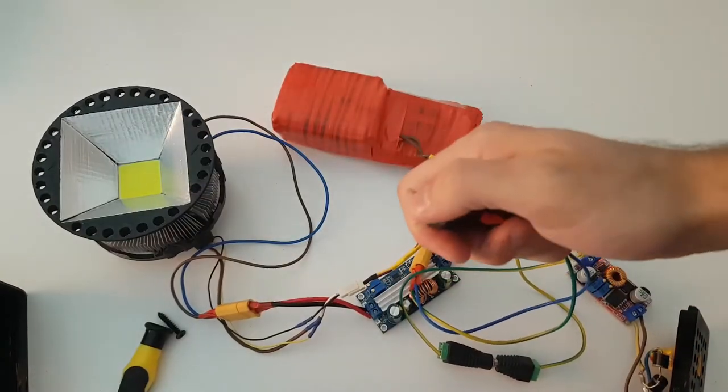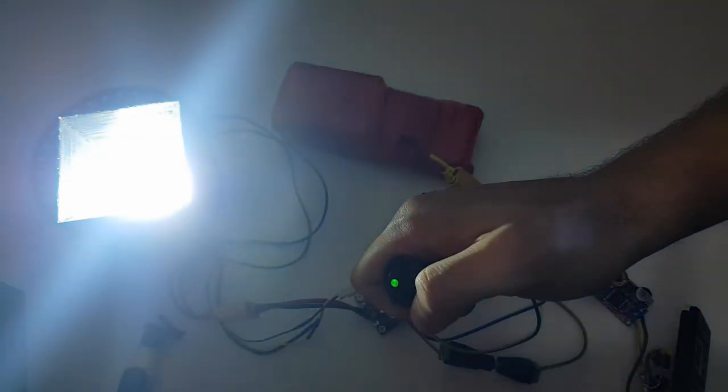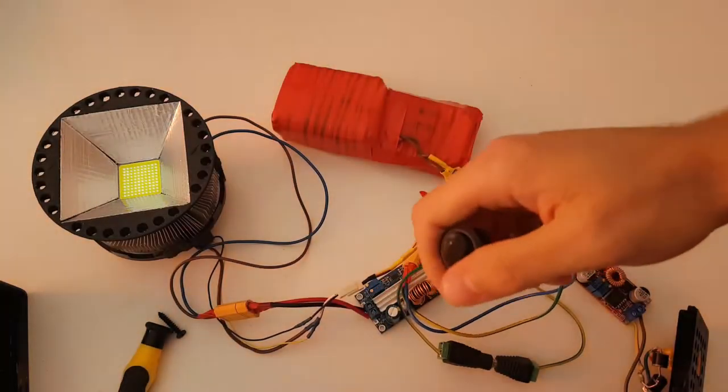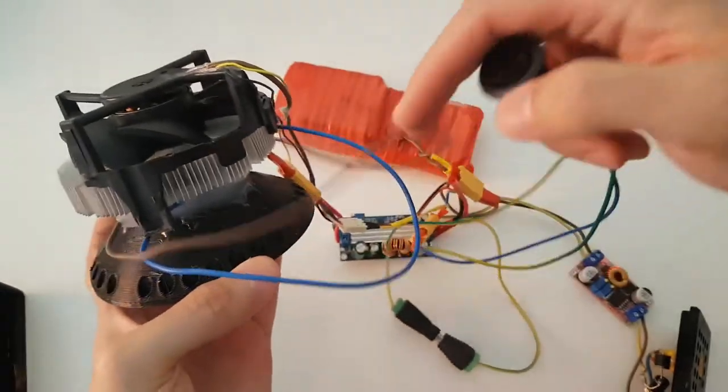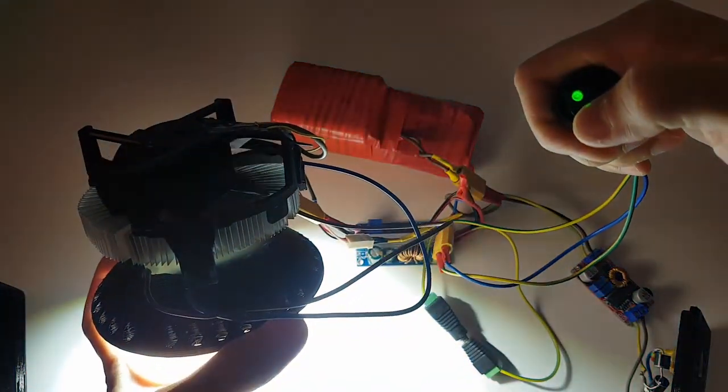So now if I press this button, I will be blinded. Jesus Christ, this is too powerful. It's actually a 10,000 lumen LED. You cannot look directly at it with the naked eye. You will be blinded. And let me show you that the fan is actually working and cooling the heat sink and the LED.